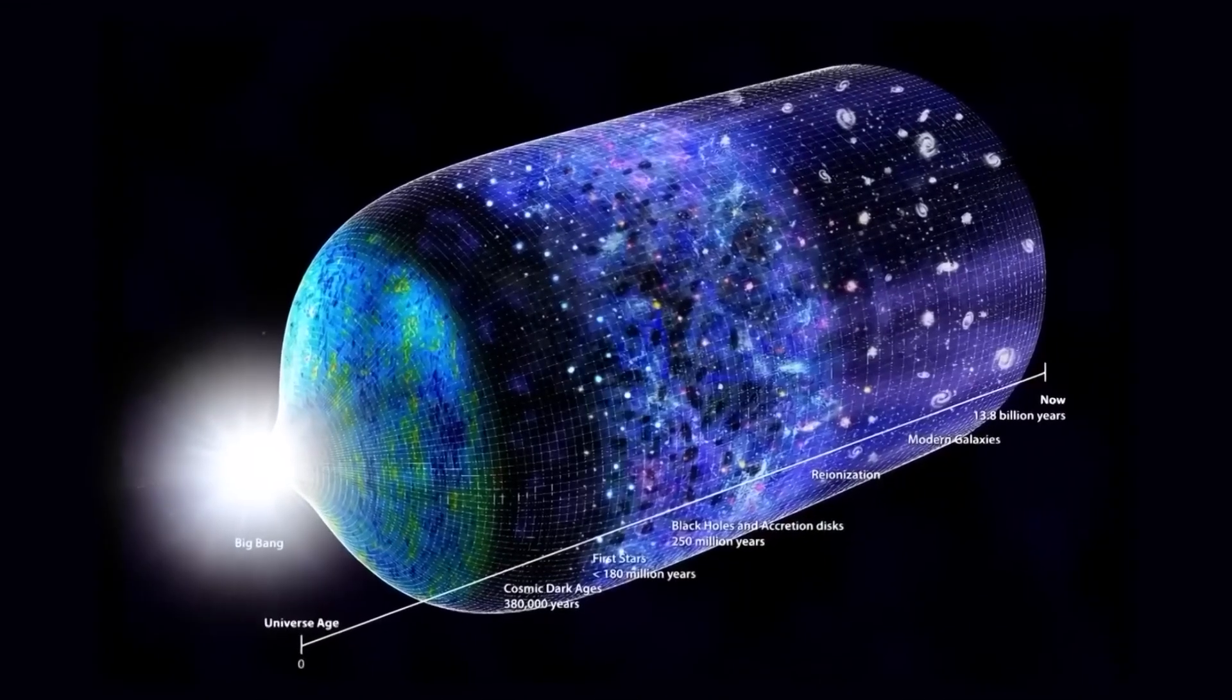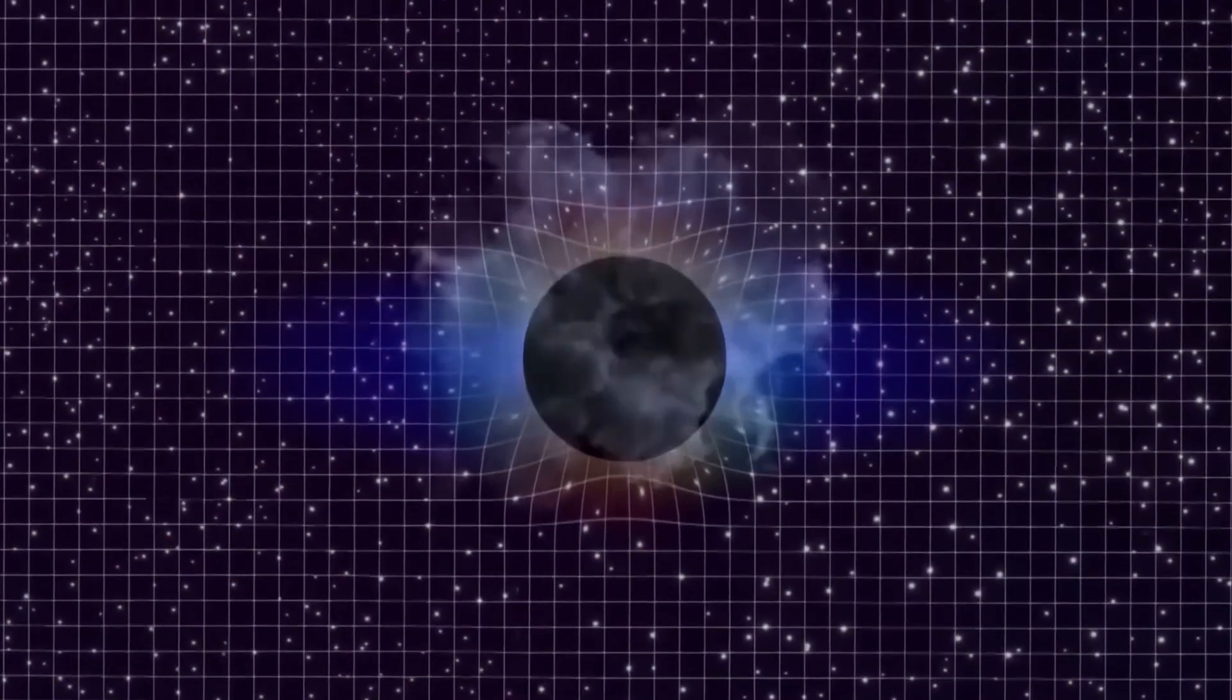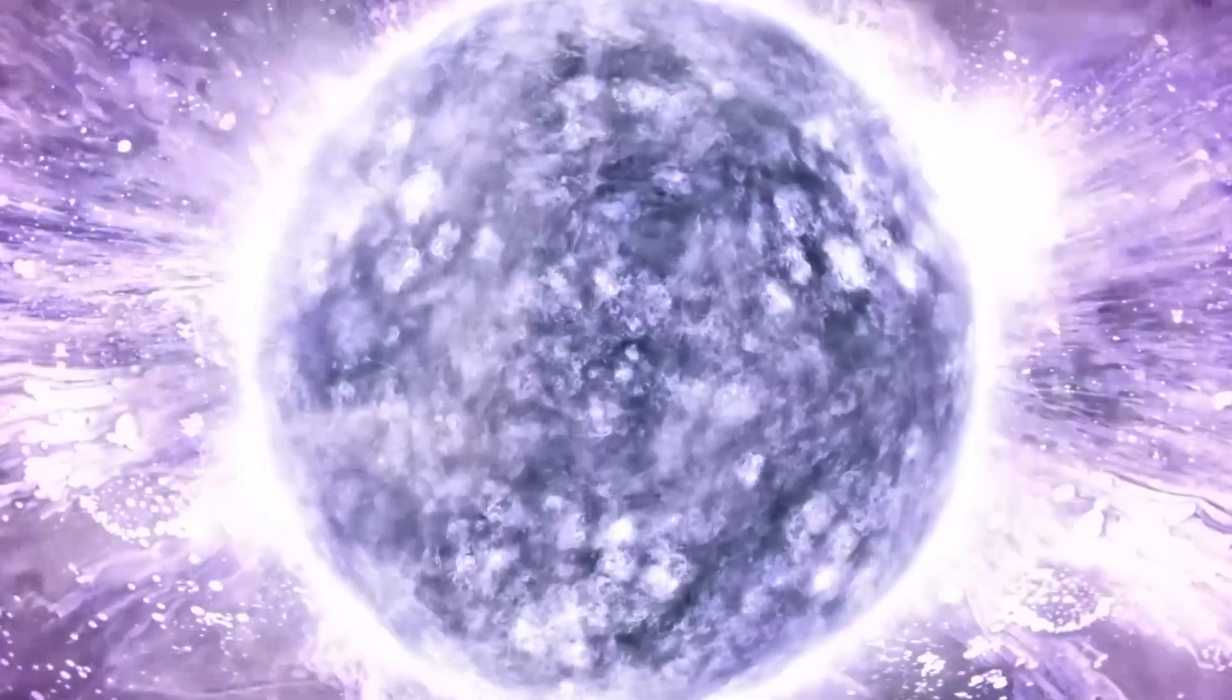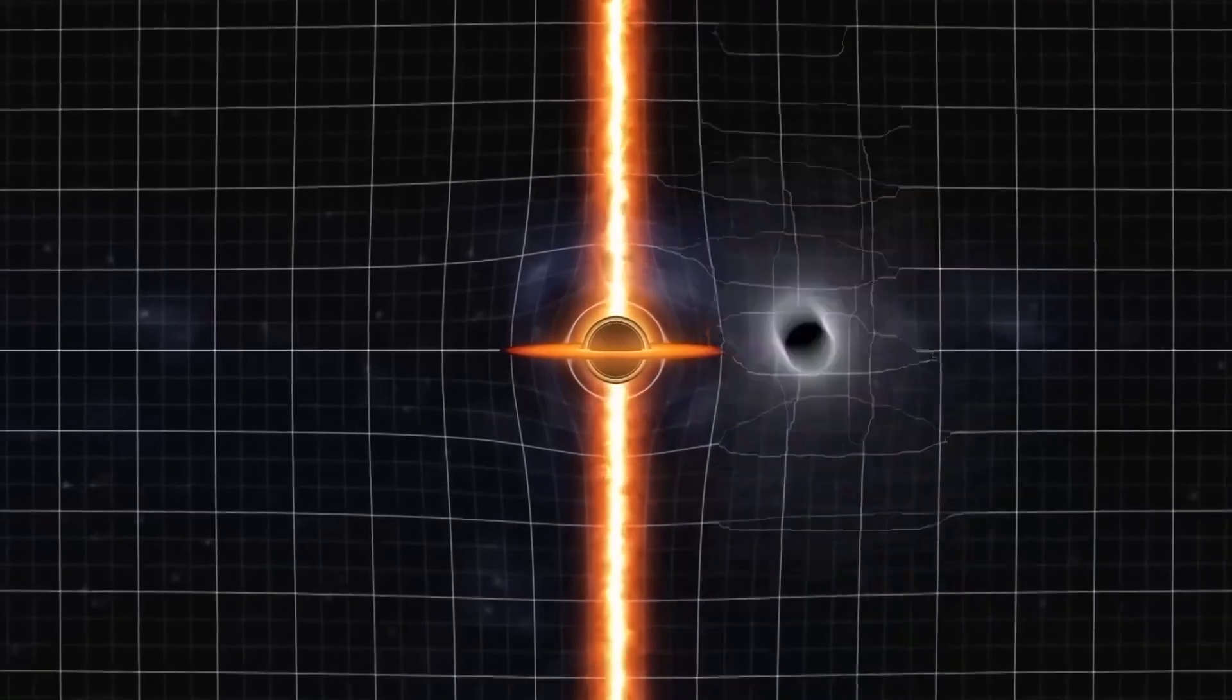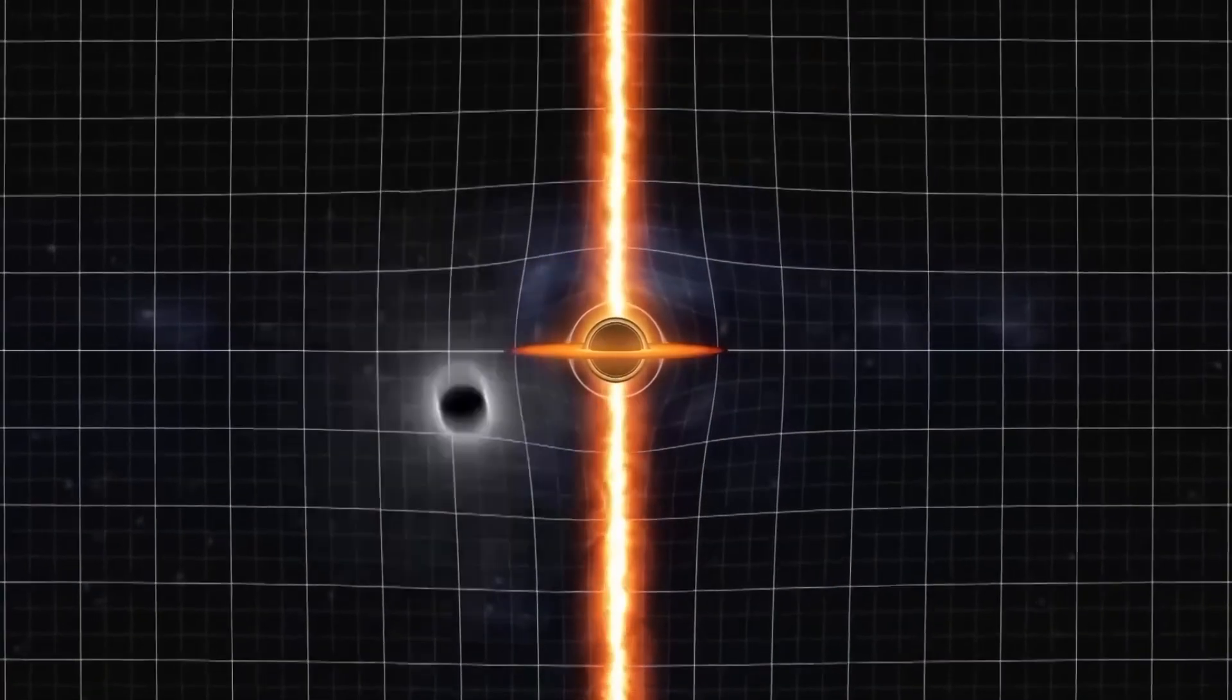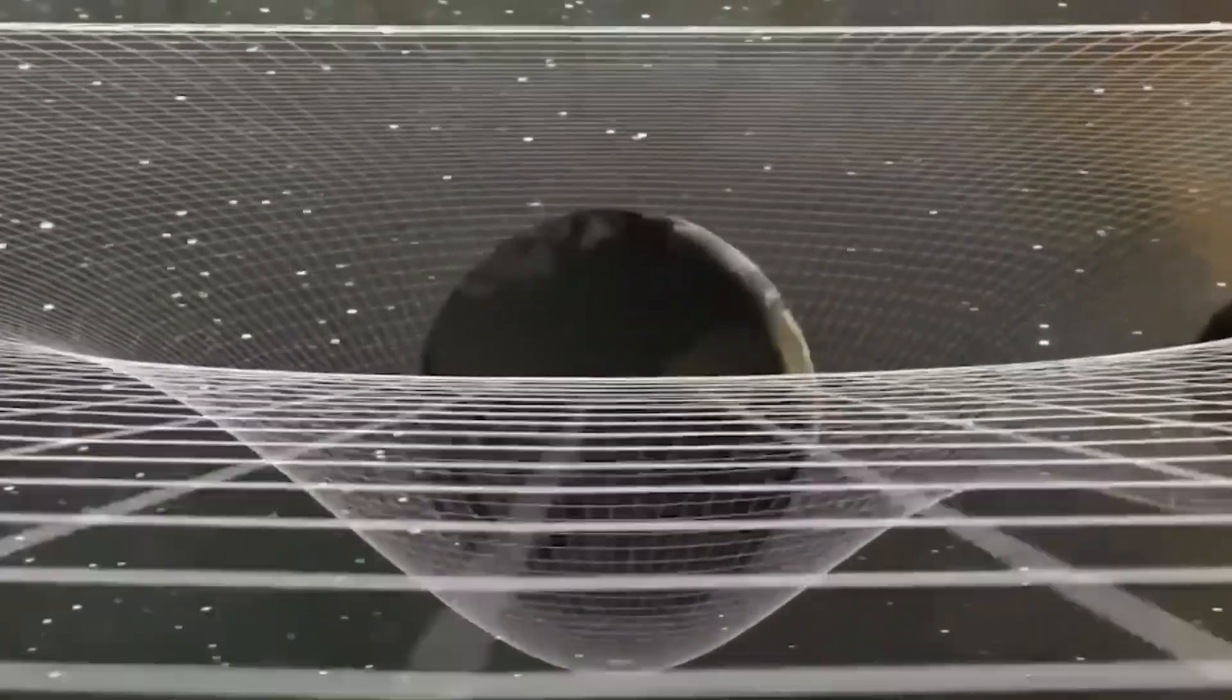Objects with mass warp space-time, creating a gravitational field that affects the motion of other objects. To visualize this, we can imagine a sheet of paper representing space-time. If we place two points onto the paper and draw a line between them, we are representing how objects move through space-time.